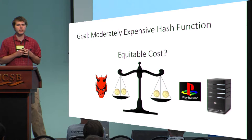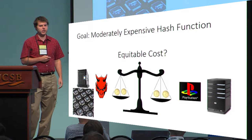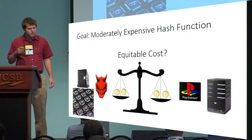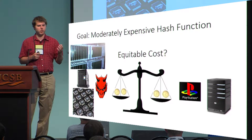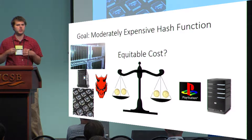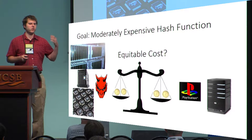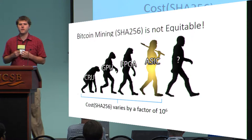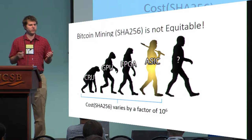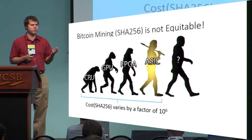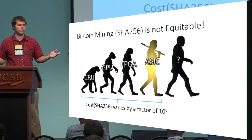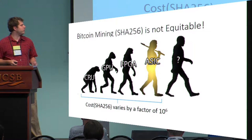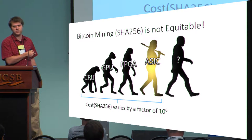In particular, the adversary doesn't have to use standard computing hardware. He could build a GPU or an ASIC, for example, to compute this memory hard function multiple times. The key question really is: are the costs equitable? If we do a lot of work to make this function harder to compute on your desktop, is it also going to be harder for the adversary to compute this function multiple times on customized hardware? Obtaining a function with equitable cost is non-trivial. By looking at Bitcoin mining pools, we can see that the SHA-256 hash function is far from equitable. In fact, the cost of evaluating SHA-256 varies by a factor of about a million when you compare the cost on a CPU versus the cost on an ASIC.